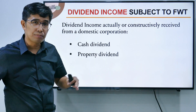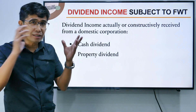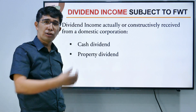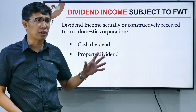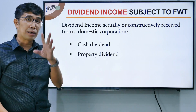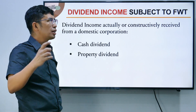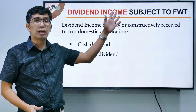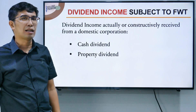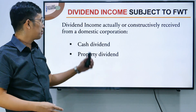For example, my investment was 1 million and San Miguel Corporation liquidates and returns exactly 1 million — that is not income, just return of capital. But what if the corporation earned well and returns 2 million? The excess 1 million is income. However, that excess from liquidating dividend will not be subject to FWT — it is placed under basic tax as ordinary income. So we only discuss cash dividend and property dividend here.